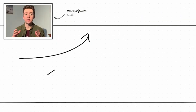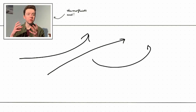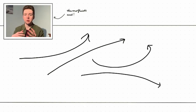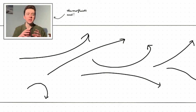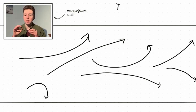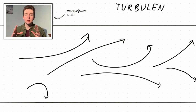Turbulent flow, on the other hand, is chaotic. There are vortices, there's swirling, everything's mixing around. The main definition of turbulent flow is that it's unsteady — which means that at a point in space, the conditions, so the velocity and the pressure, vary with time. And that's turbulence.